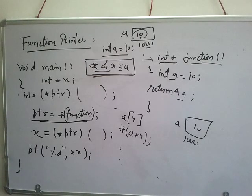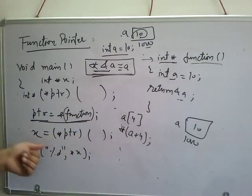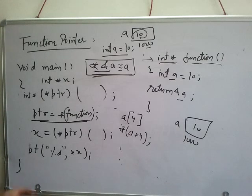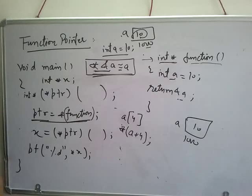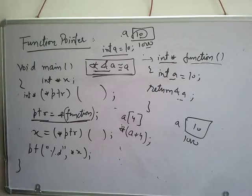So keep this in mind. When you execute this statement, what will print? 10 will be printed, because this function is returning an address that is stored in x, and when you write star x, it means value at that address. So 10 will get printed. So this is the story with function pointers. That's all for this lecture. In the next lecture we will discuss some questions on pointers and strings. Till then, bye.